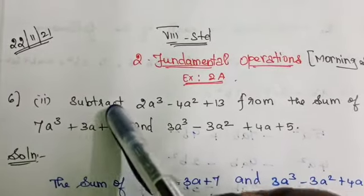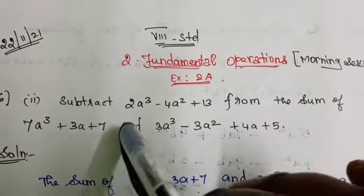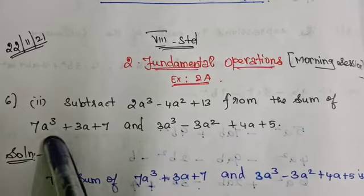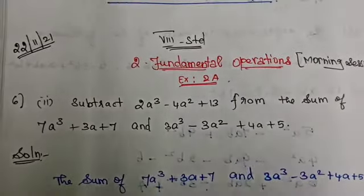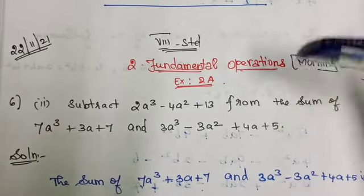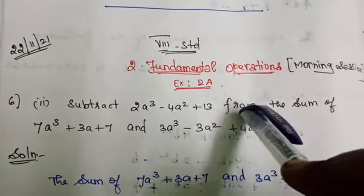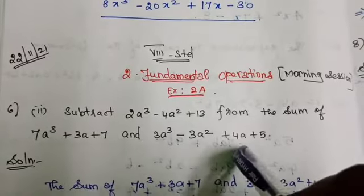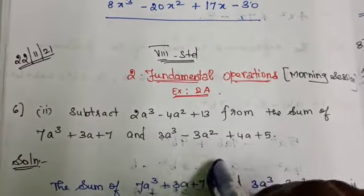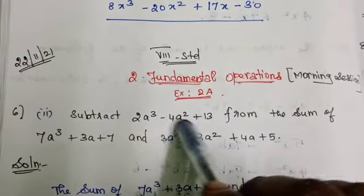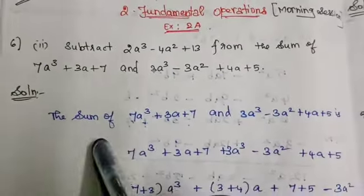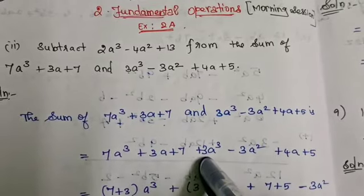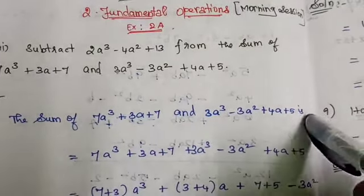Sixth sum, second subdivision. The first subdivision you take as homework. Subtract 2a³ minus 4a² plus 13 from the sum of 7a³ plus 3a plus 7 and 3a³ minus 3a² plus 4a plus 5. The question asks us to subtract that number from the sum of these two numbers. First, find the sum of the two expressions.